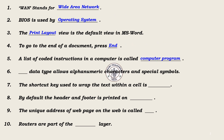5. A list of coded instructions in a computer is called Computer Program. 6. Blank data type allows alphanumeric characters and special symbols — Text. 7. The shortcut key used to wrap the text within a cell is Alt plus Enter.